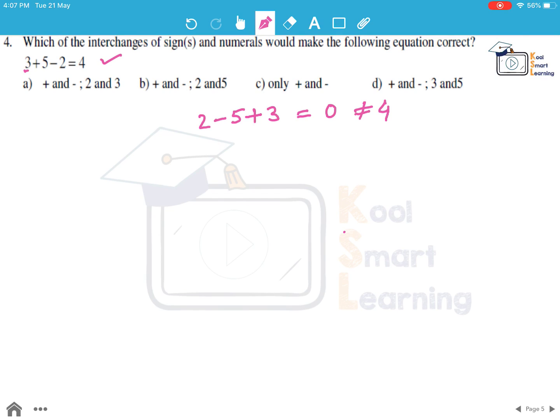Looking at the B option. Again plus and minus are interchanged and 2 and 5 are interchanged. So we get 3. Instead of plus we make it minus. Instead of 5 we make it 2. Instead of minus we make it plus. And then in place of 2 we write 5. So this is 3 minus 2 plus 5. This becomes 6 which is again not equal to 4.